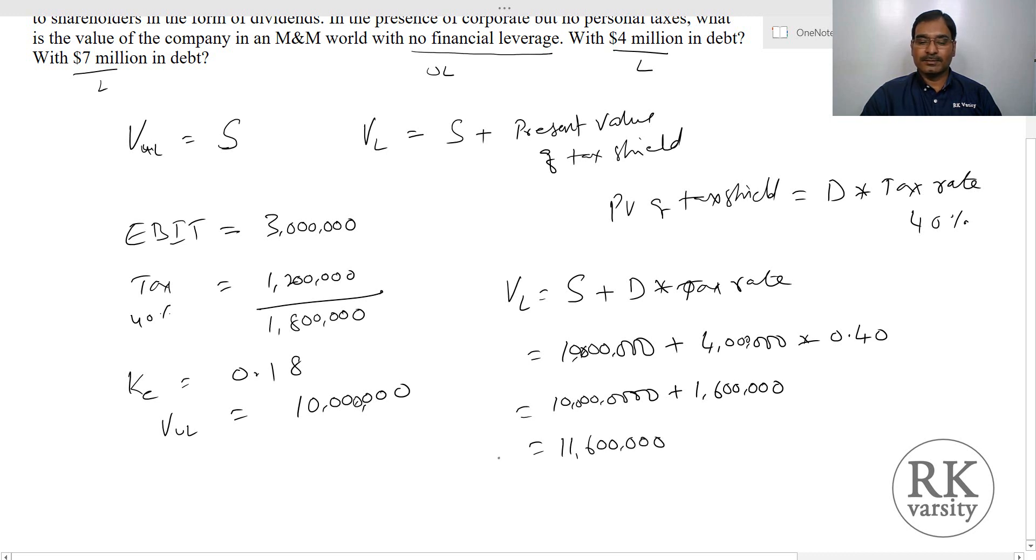If you observe with no leverage, that is no debt in capital structure, the firm's value is only $10 million, whereas when debt of $4 million is used, the value increases from $10 million to $11,600,000.